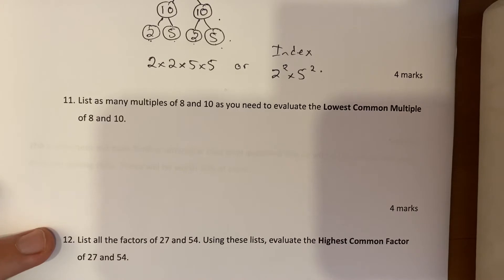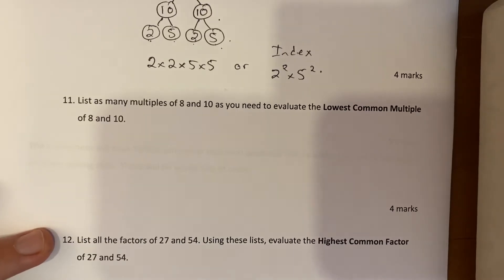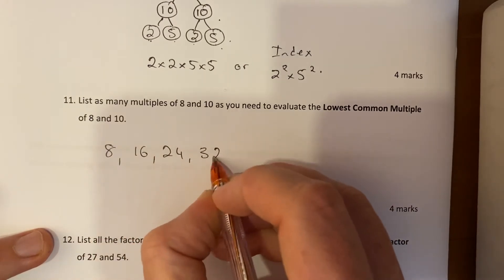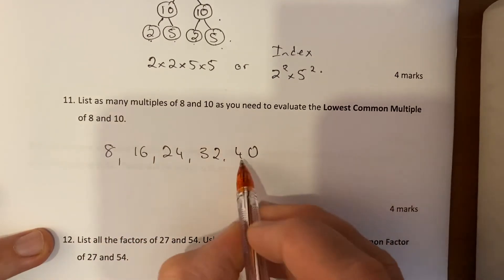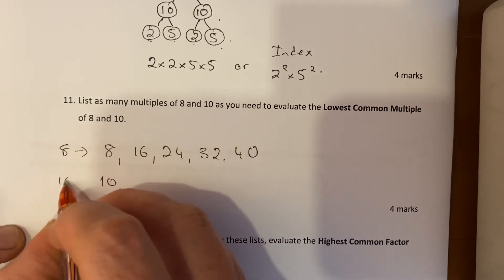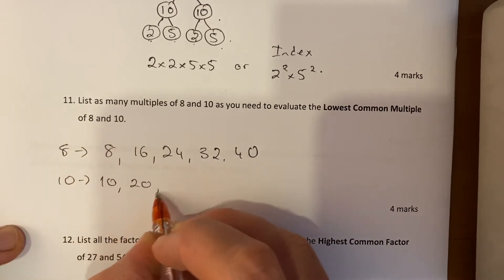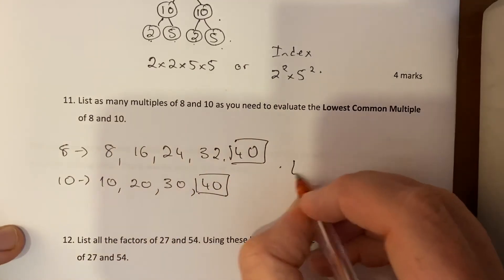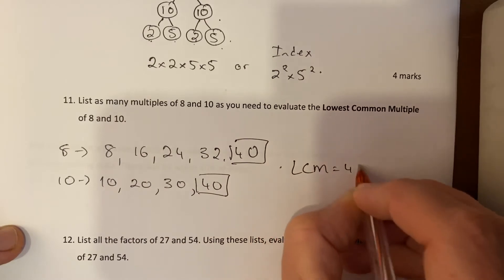List as many multiples of 8 as you need to evaluate the lowest common multiple. So multiples: 8, 16, 24, 32, 40 - I'm going to stop now because I have a feeling about 40. For 10: 10, 20, 30, 40 - I'm going to stop. Look, 40 is there in both, so the lowest common multiple is 40.